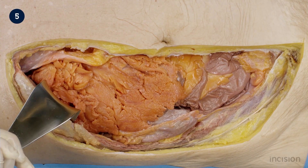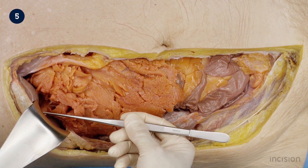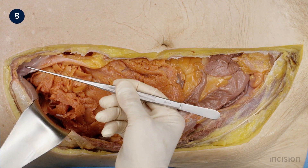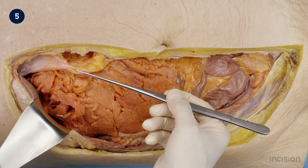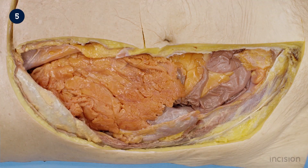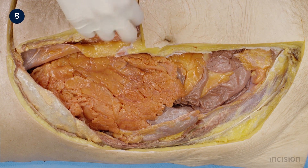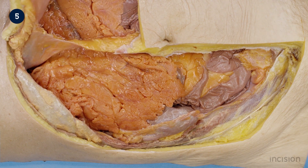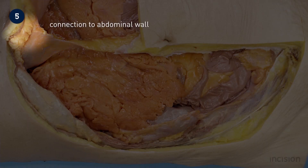The ribs are retracted to demonstrate the connection between the liver, the falciform ligament, and the round ligament. The left upper quadrant of the abdominal wall is dissected to show its relation to the falciform and round ligament. Here you can see the connection to the posterior side of the abdominal wall.